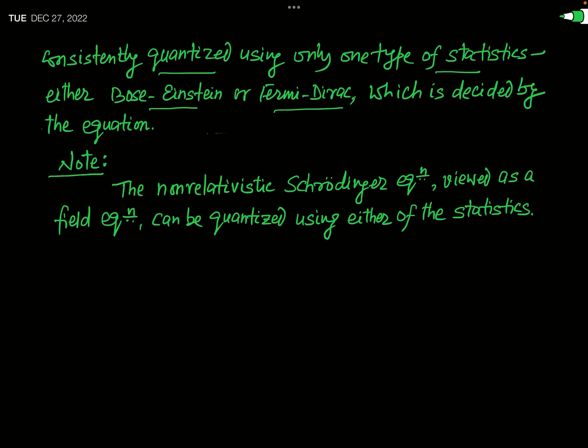There are two types of statistics: Bose-Einstein statistics and Fermi-Dirac statistics. A particular wave equation can be quantized using either one or the other. Which statistics will be used — that completely depends on the wave equation. This will be clarified when our video on second quantization comes.